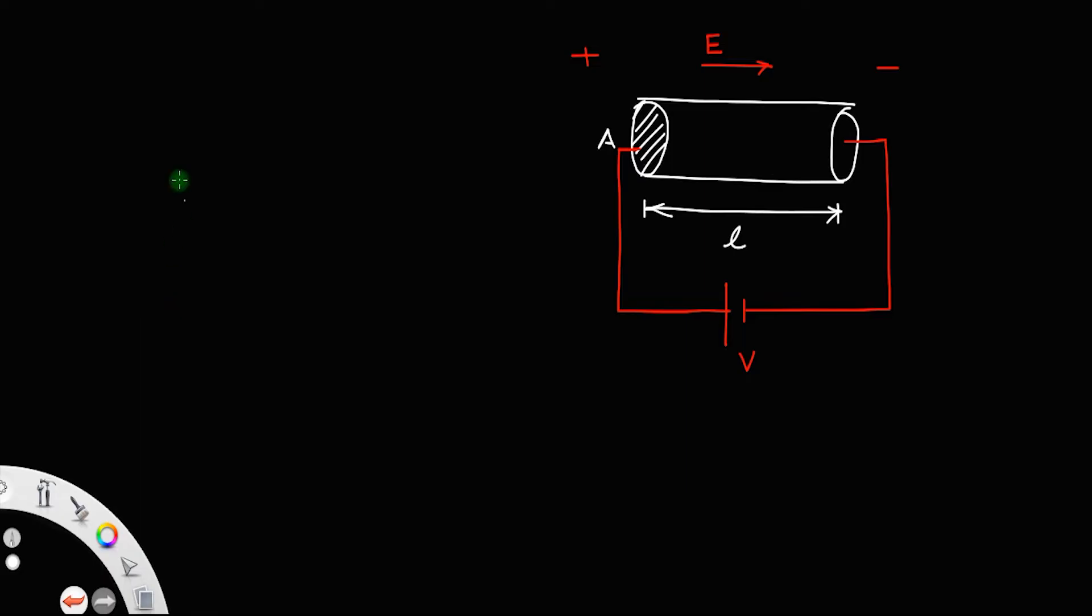Now we have the drift current, or the electric current is due to the drift velocity of the electrons. So we have an expression I is equal to number density of the electrons into cross sectional area into charge of the electron and drift velocity.